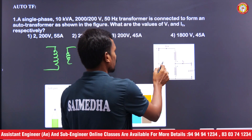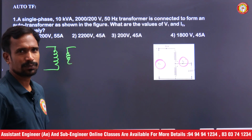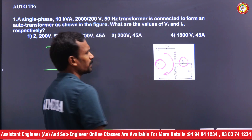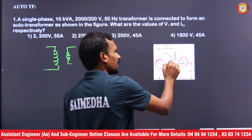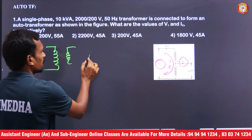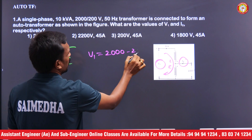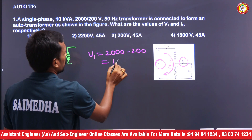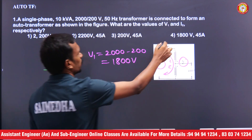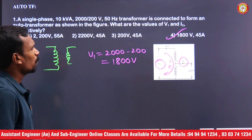What are the values of V1 and I2? First, is this connected in addition or subtraction? Since the current is leaving from one coil and entering into the other coil, this is a subtraction connection. So V1 equals 2000 minus 200, which equals 1800 volts. Now what about the current?